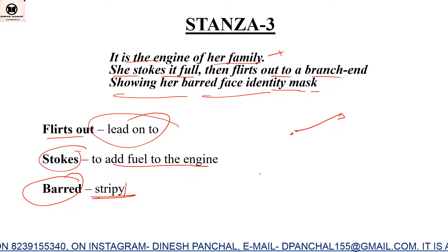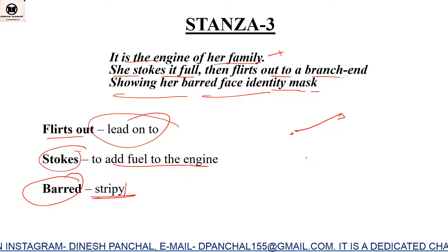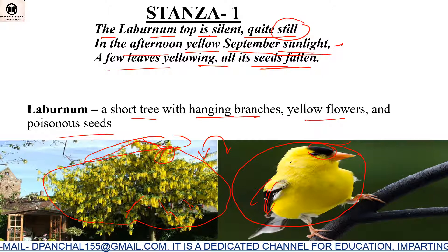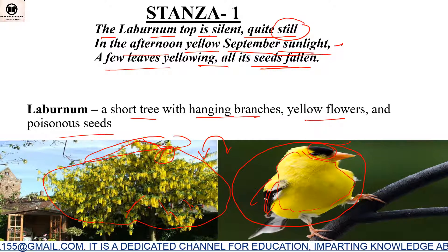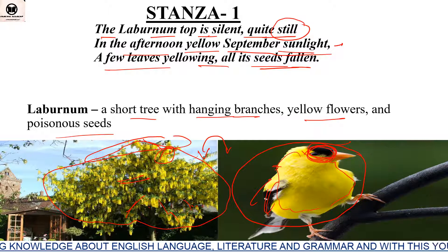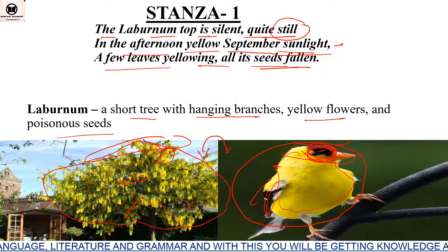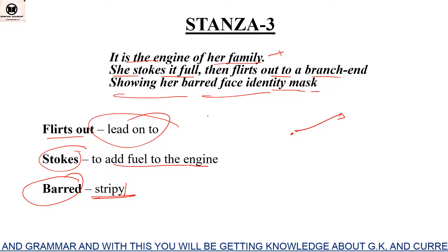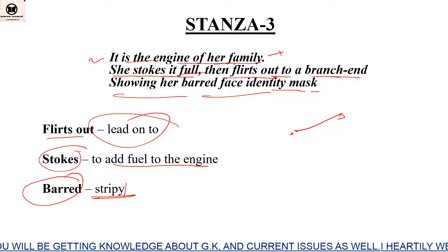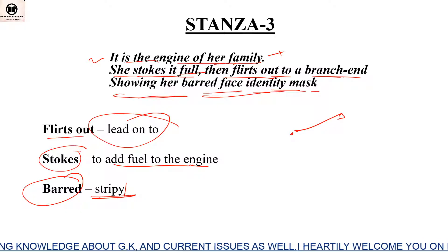'Showing her beard face, identity mask' — the beard means strips on her face acting as an identity mask. As we noted, this bird's colour is usually yellow, and the Lebanon tree's flowers are also yellow. When she goes inside the tree, her identity — her yellow colour — blends with the yellow leaves, and her masked stripy face becomes her visible identity.